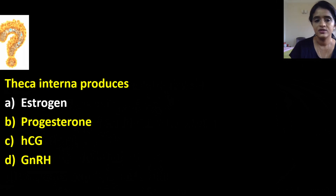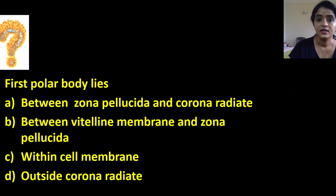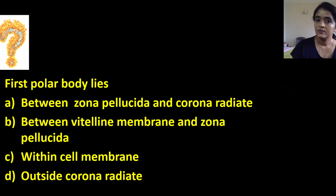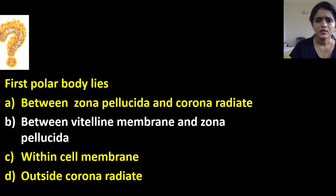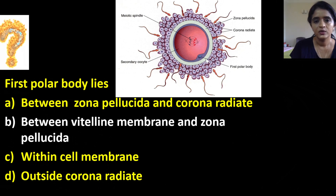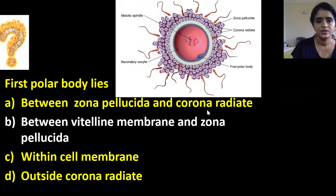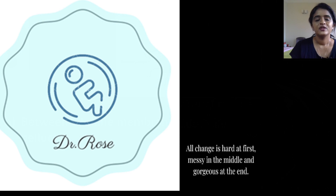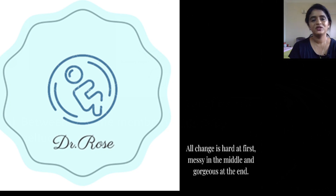Where does the first polar body lie? The options are: between zona pellucida and corona radiata, between the vitelline membrane and zona pellucida, within the cell membrane, or outside the corona radiata. The answer is between the vitelline membrane of the secondary oocyte and the zona pellucida — this region is known as the perivitelline space. The first polar body is expelled after the first meiotic division and is located in the perivitelline space.